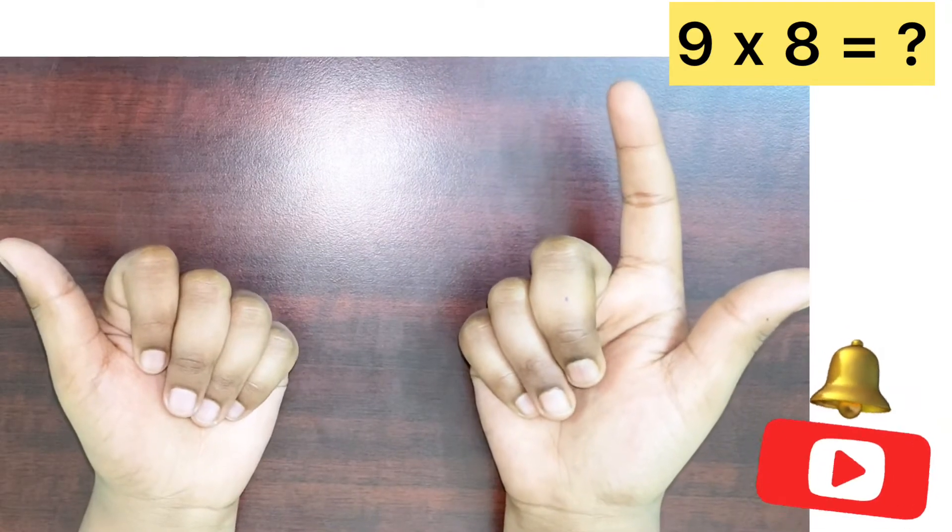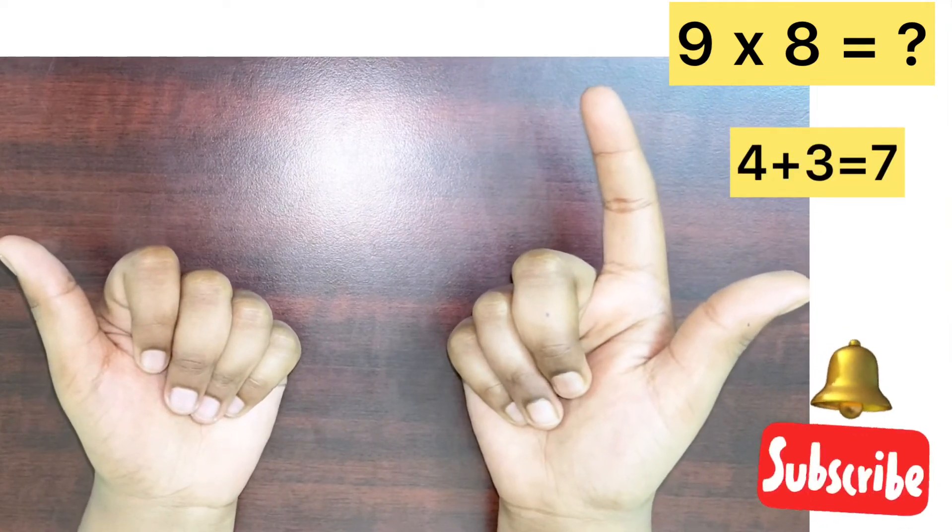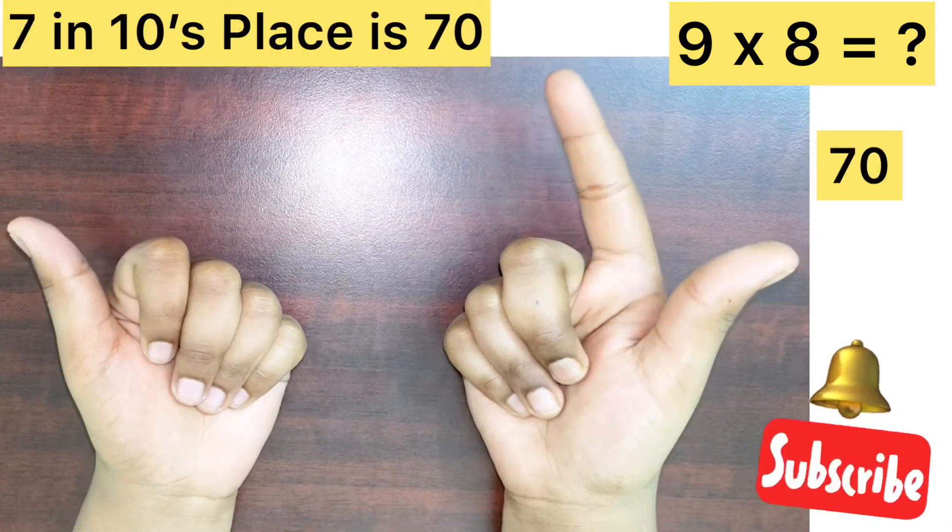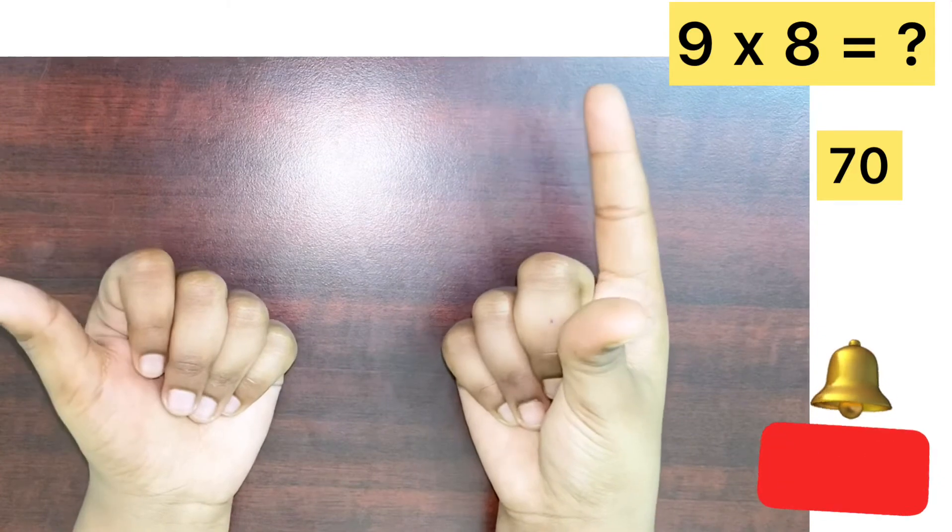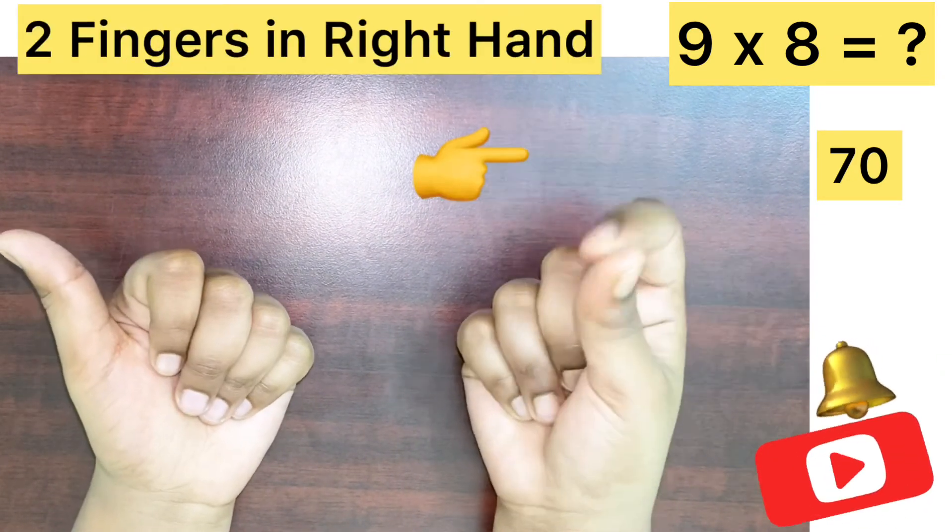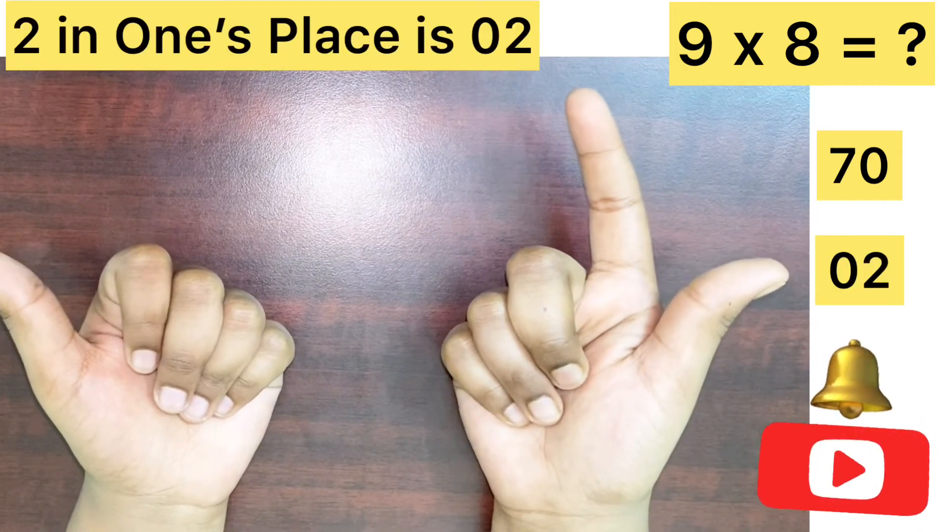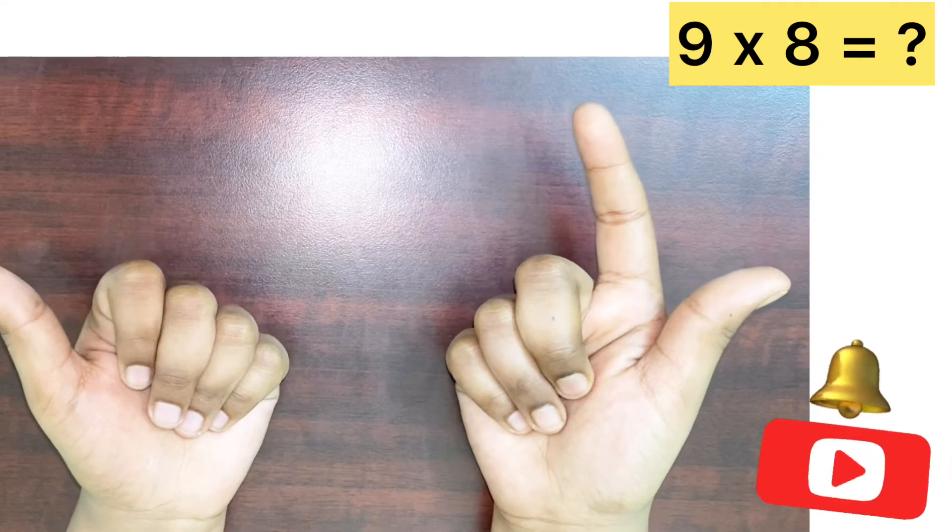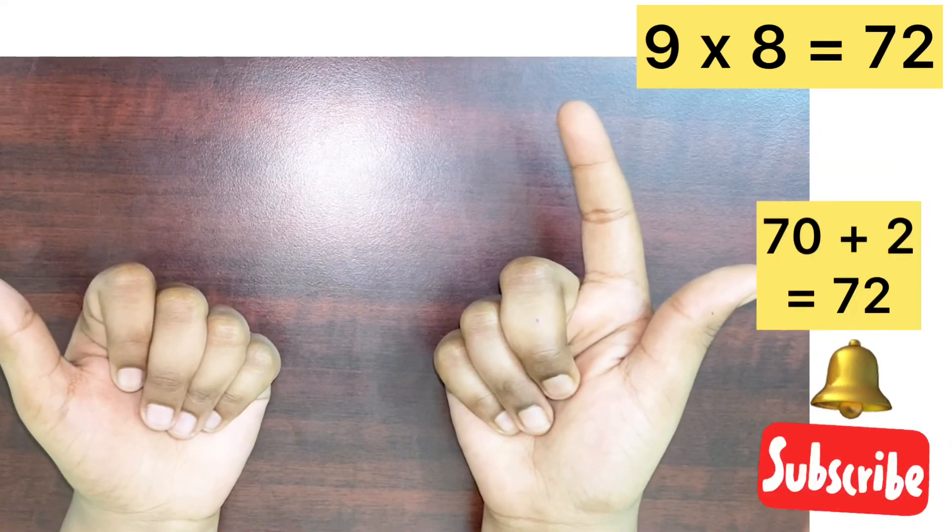Count your folded fingers from both of your hands together. Here that is 7. Keep the 7 in 10's place. So, it is 70. Now, multiply both unfolded fingers with each other. 1 multiplied by 2. That is 2. Keep the 2 in 1's place. Finally, we get the answer as 70 plus 2, 72.